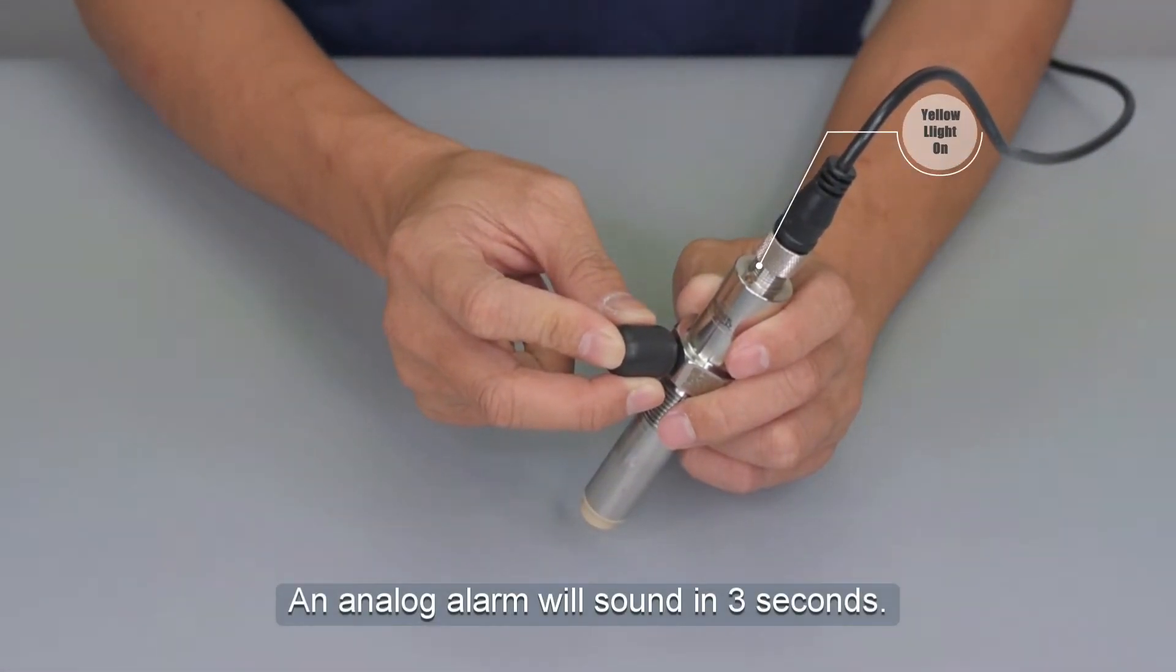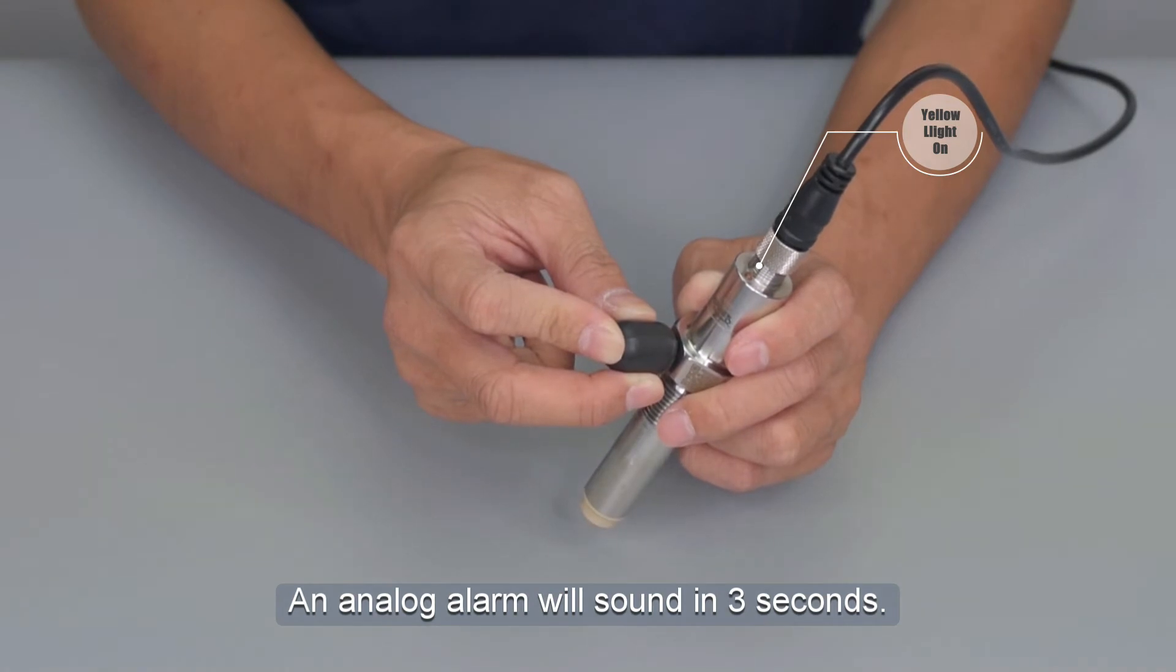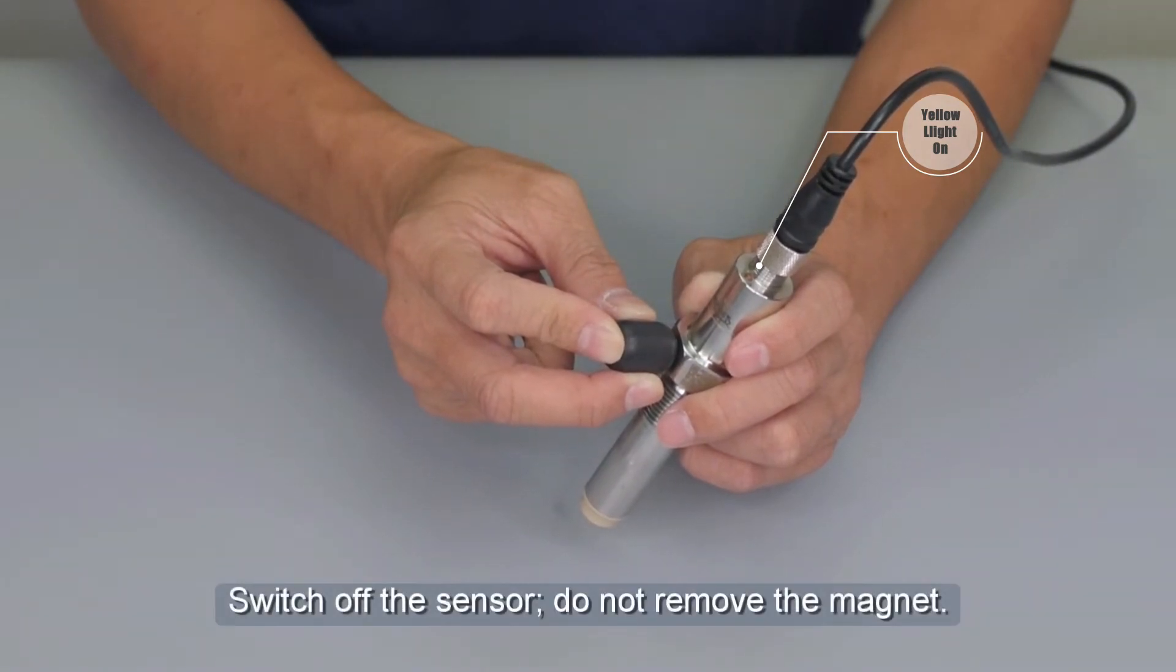If the yellow light is on, this means there is no induction problem. Switch off the sensor and do not remove the magnet.